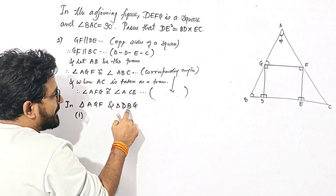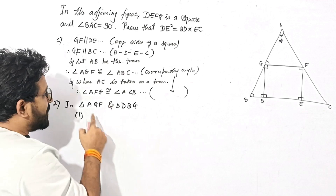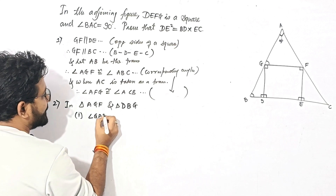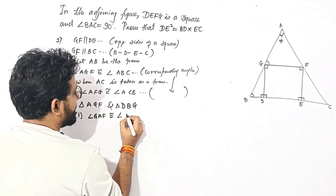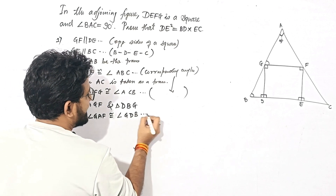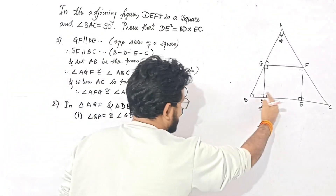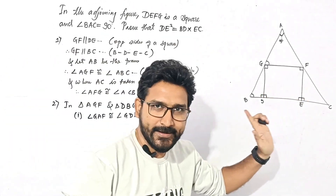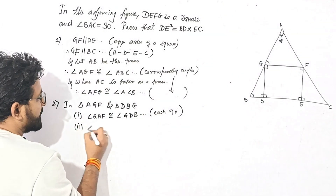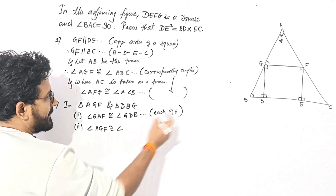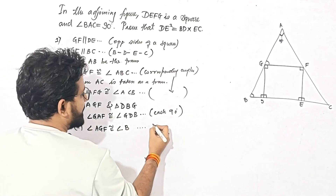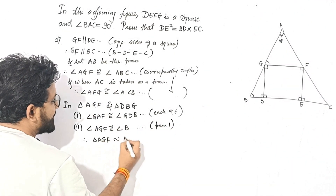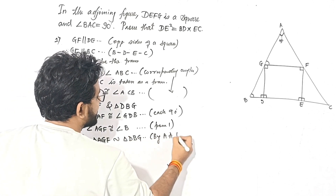Now, angle A of triangle GAF is congruent to angle D of triangle DBG — each 90 degrees, angle of a square, so by linear pair these angles are also 90 degrees. Second, angle AGF is congruent to angle B — they are corresponding angles from step 1. Therefore triangle AGF is similar to triangle DBG by AA test of similarity.